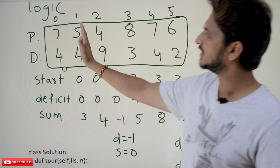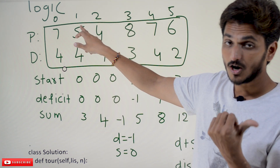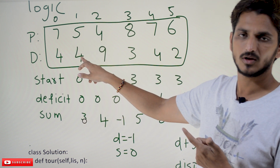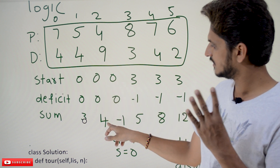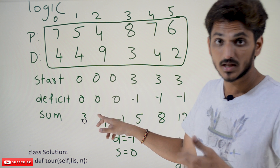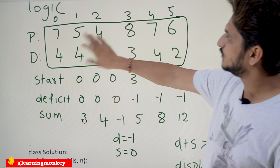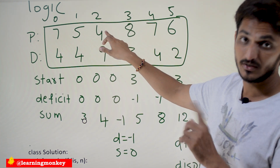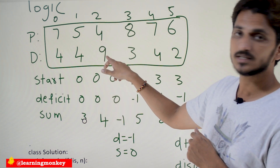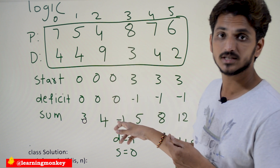Moving to the next position, 5 litres are available. Previously 3 litres remained, so 3 plus 5 is 8, minus 4 gives a sum of 4. We are still on the positive side, so deficit remains 0. Moving further, we had 4 litres, gain 4 more giving 8, but then need to travel 9 units. 8 minus 9 equals minus 1 — we are in deficit.